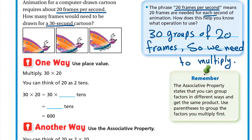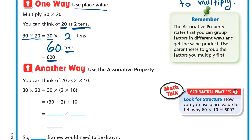One way is to use place value. To multiply 30 by 20, think of 20 as two tens. So 30 × 20 equals 30 times two tens. That gives us 30 × 2 = 60, so we have 60 tens. Since 'tens' means one zero, 60 tens is 600.